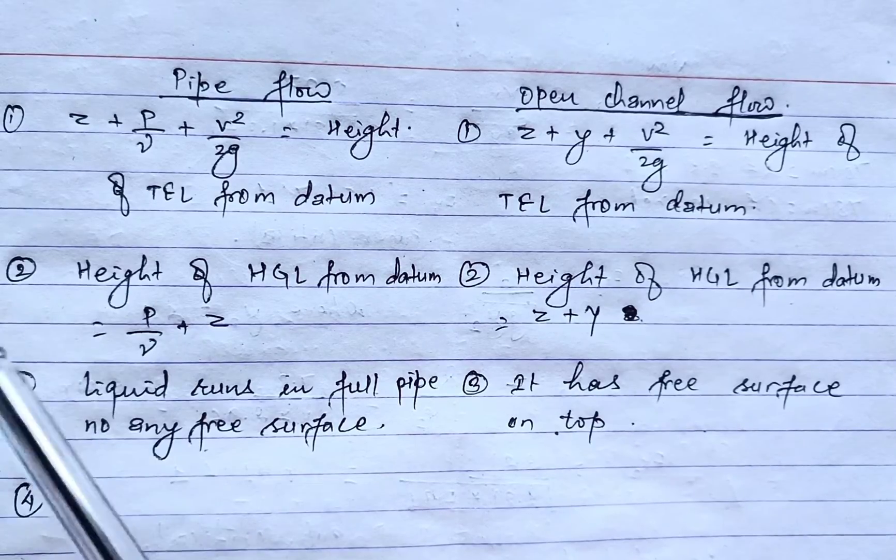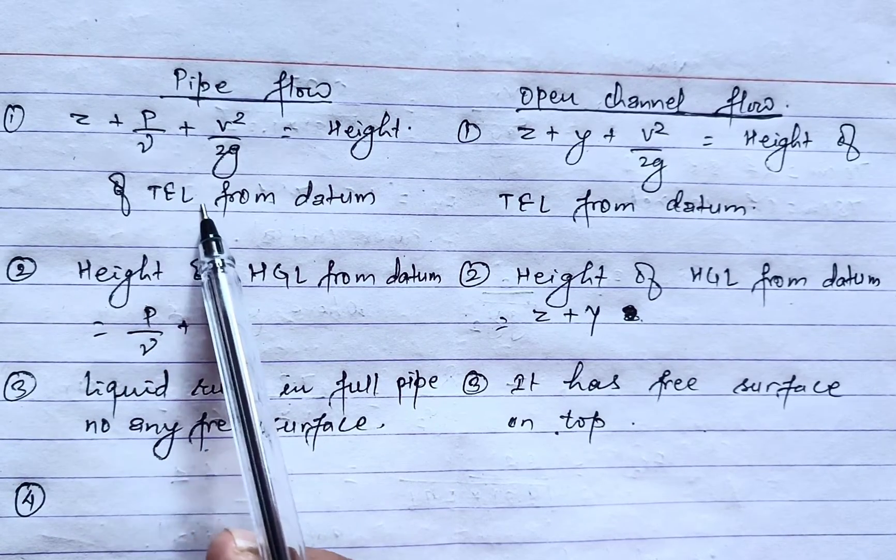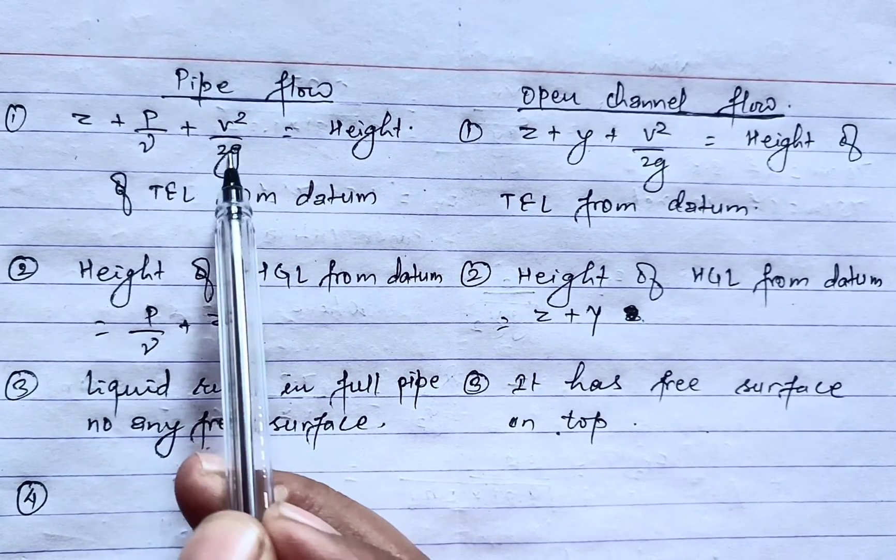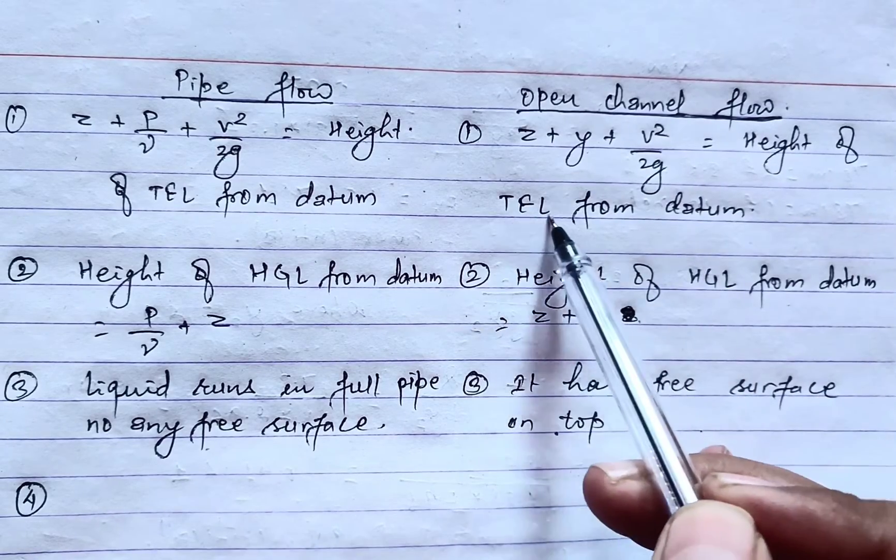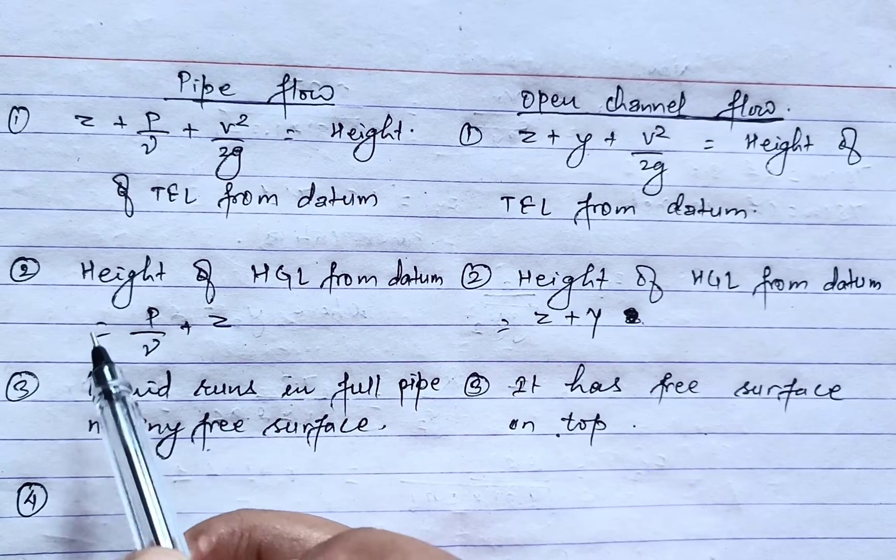Now let's discuss differences between pipe flow and open channel flow. In pipe flow, the height of the total energy line from datum is given as z plus p by gamma plus v squared by 2g, whereas in open channel flow the height of total energy line from datum is given as z plus y plus v squared by 2g.